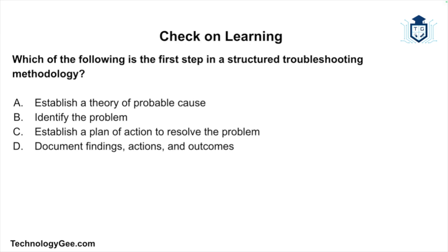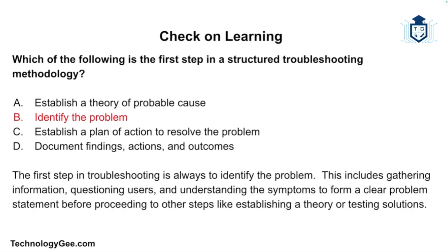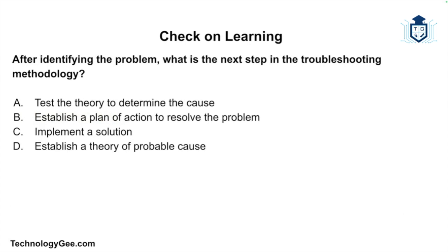Now for the check on learning section. Question one: which of the following is the first step in a structured troubleshooting methodology — establishing a theory of probable cause, identifying the problem, establishing a plan of action, or documenting findings? The correct answer is identifying the problem. The first step is always to identify the problem, which includes gathering information, questioning users, and understanding symptoms to form a clear problem statement before proceeding to other steps.